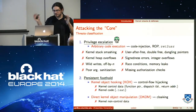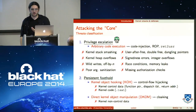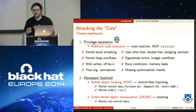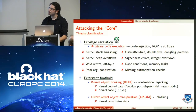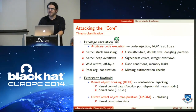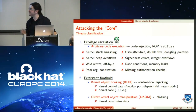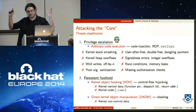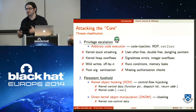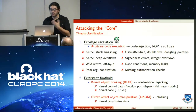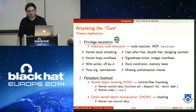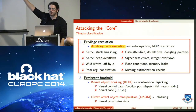Kernel attacks fall into two categories. The first is privilege escalation, where the attacker already has some presence on the OS — perhaps a process — and the goal is to become root. The second is persistent foothold, where the attacker already has root access and needs to maintain it, such as with rootkits. In this talk, whenever I discuss an attack, I'm talking about the first class — privilege escalation.